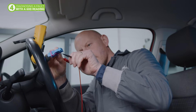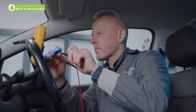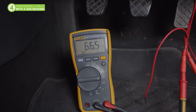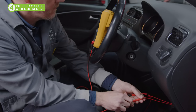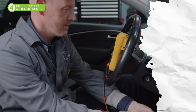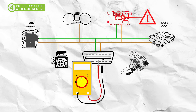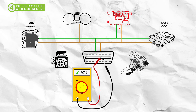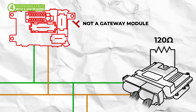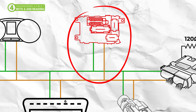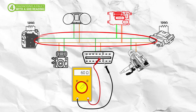All of these readings will need investigating further to determine where the fault lies. However, if you got a good reading of 60 ohms when performing this initial resistance check, it doesn't mean that there isn't a fault on the bus. You could still get a 60 ohm reading with an open circuit being present in the wiring to one of the modules or in the module itself, providing it is not a gateway module or it doesn't contain a terminating resistor.